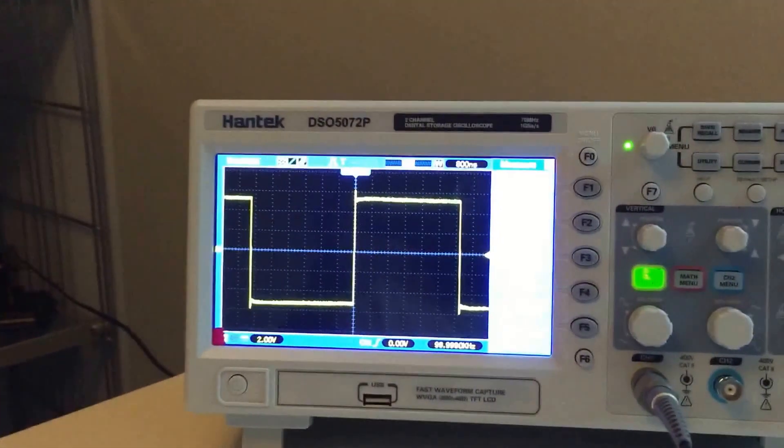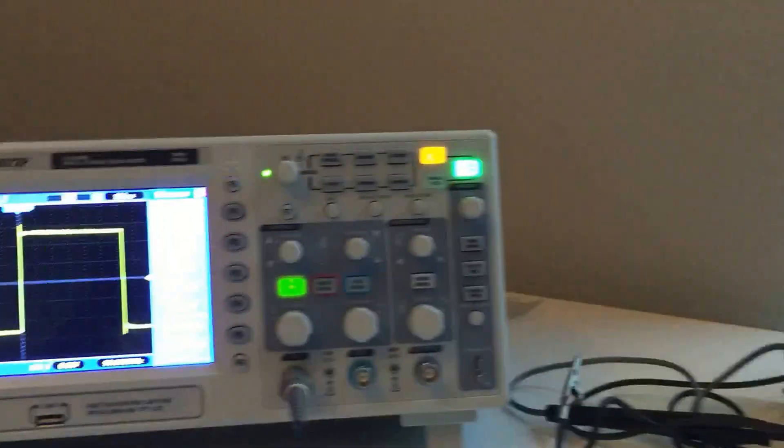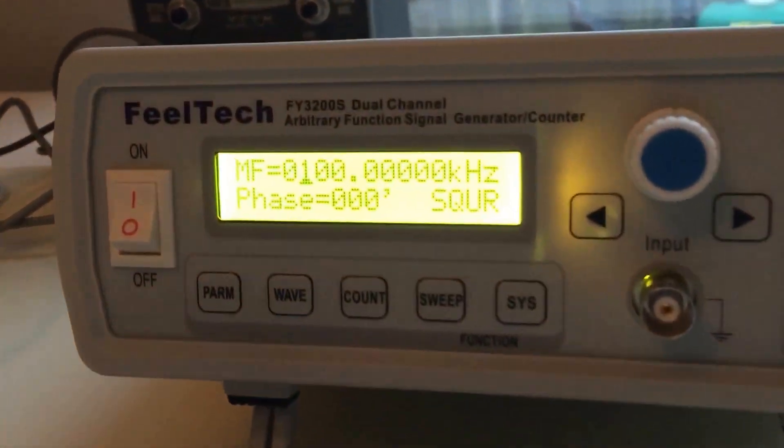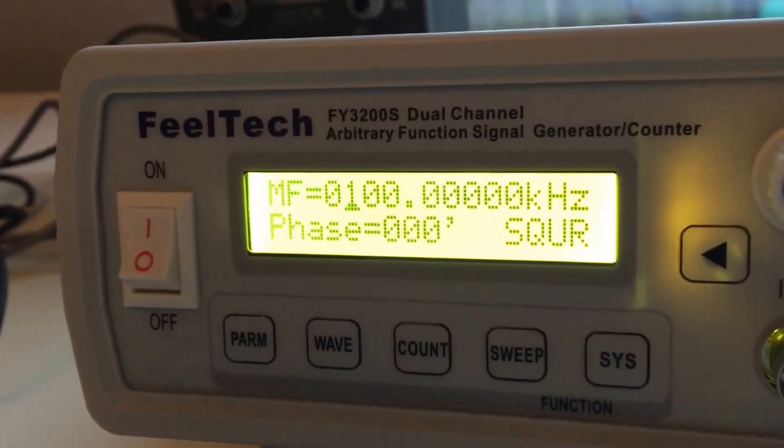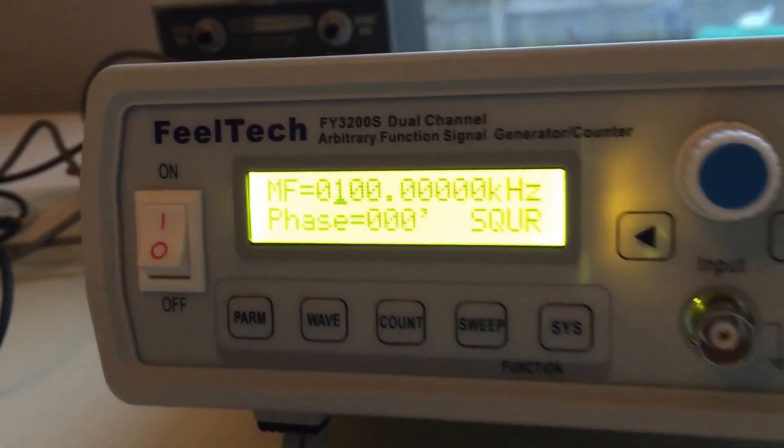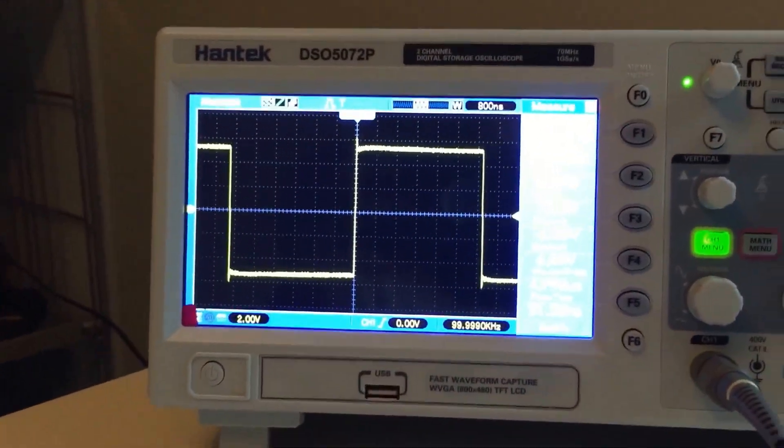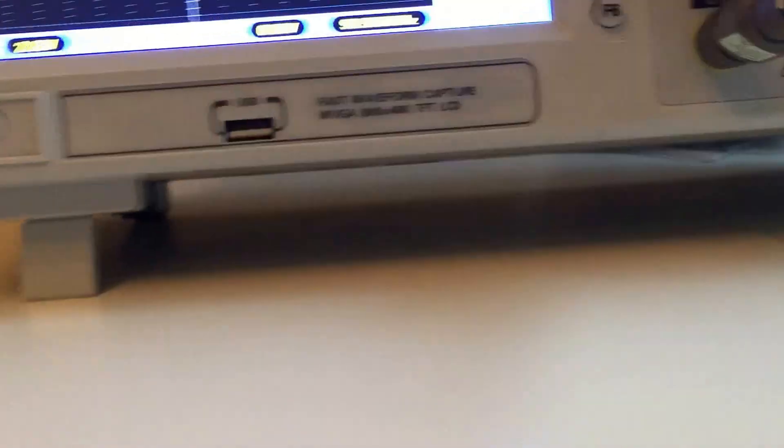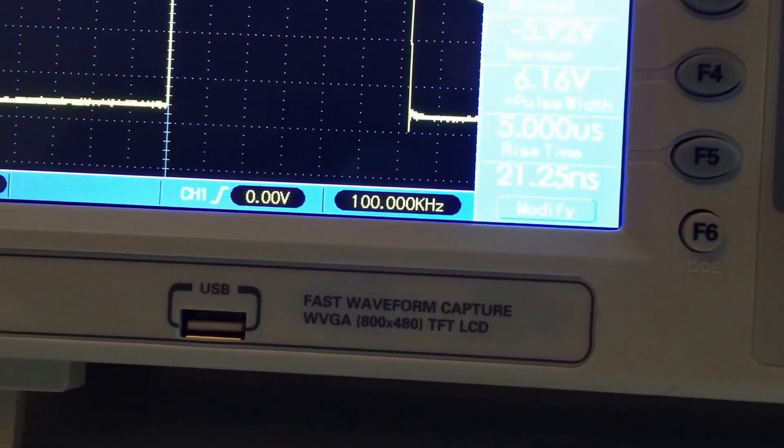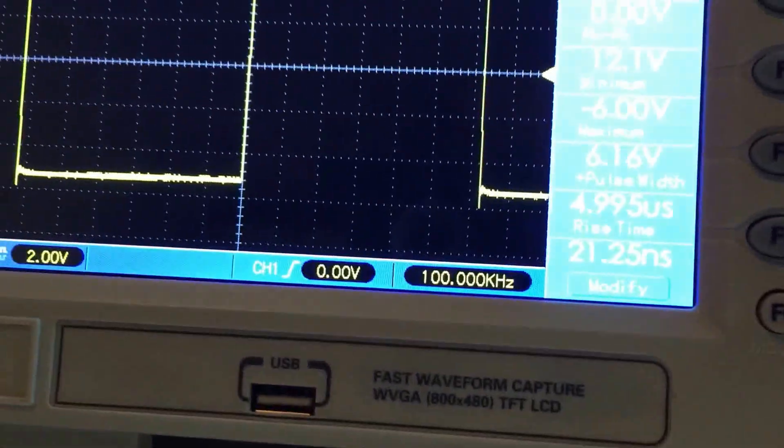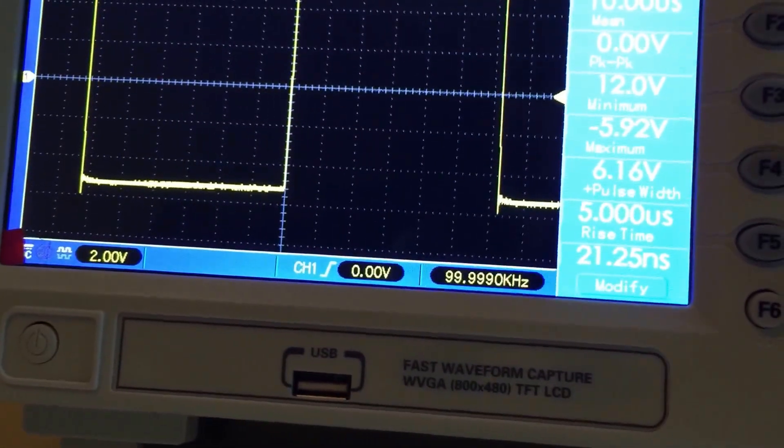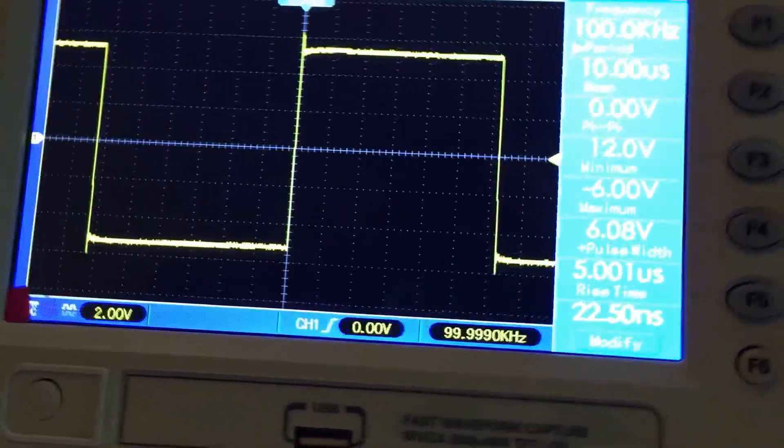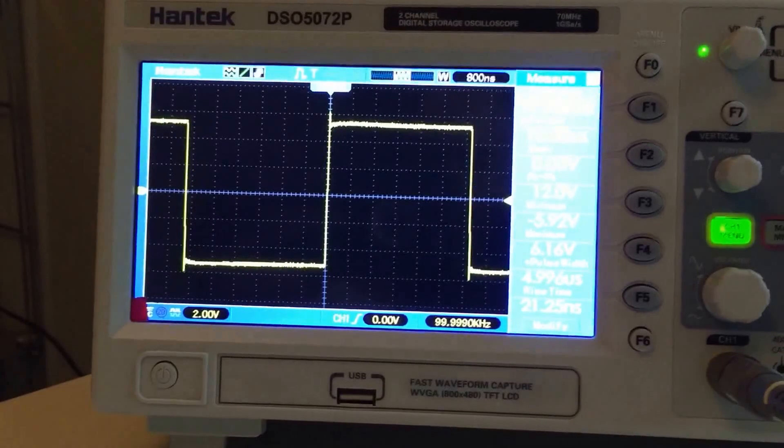I had my opportunity to now get the 5072 on the bench and I'm using it to check out this FeelTech function generator. Right now I have it on the square wave and we're at 100 kilohertz, which matches right there almost exactly. So it's putting out what it advertises. What I found interesting was I saw this on my analog scope and I wanted to see if the problem existed.